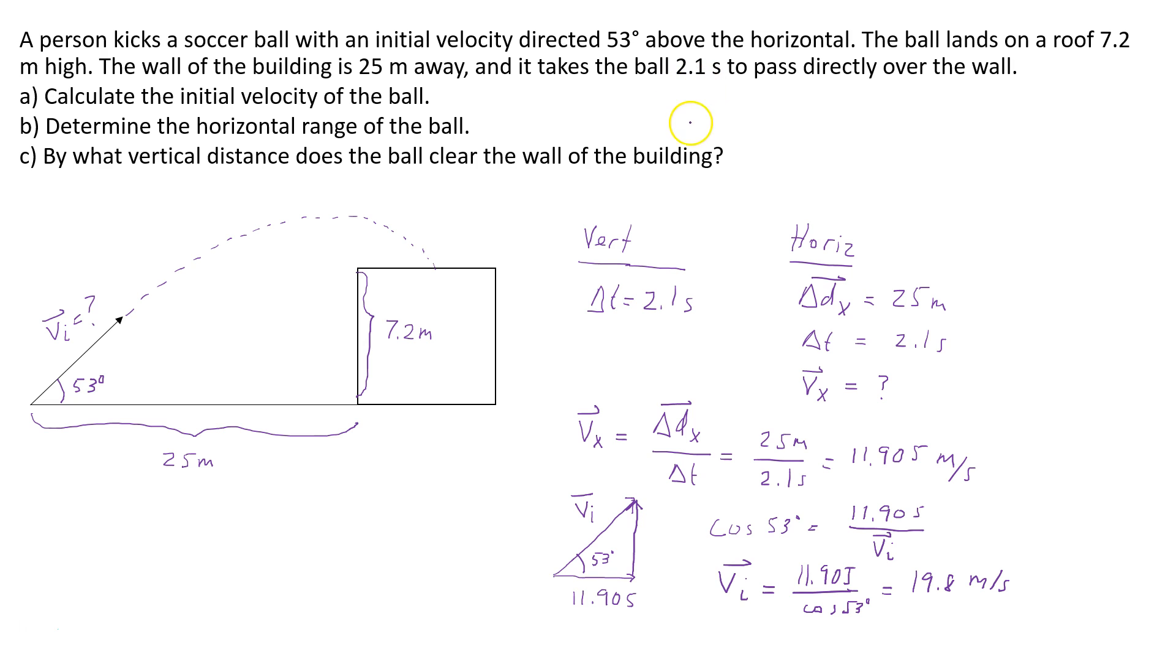The only way you can write something like 19.8 to two significant digits is if you use scientific notation. So that will give us 2.0 times 10 to the 1, so I'm rounding it to 20 meters per second. And since it's a vector quantity, we have to add a direction. So the direction is 53 degrees above the horizontal.